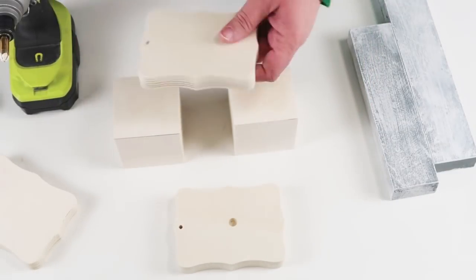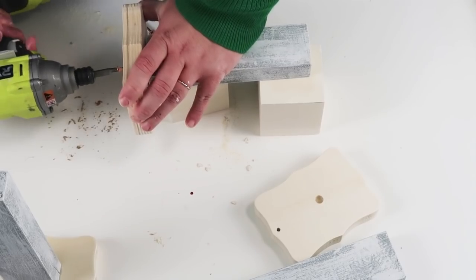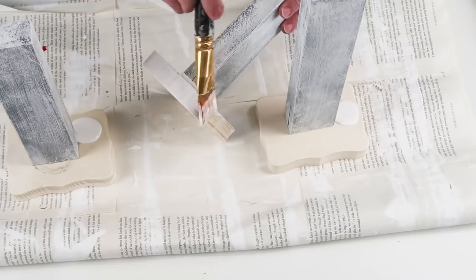So I went ahead and did some countersink holes. This is going to allow the drill to be able to sink that screw all the way down in there so that you don't see it when you put it on your table and it doesn't scratch your table.